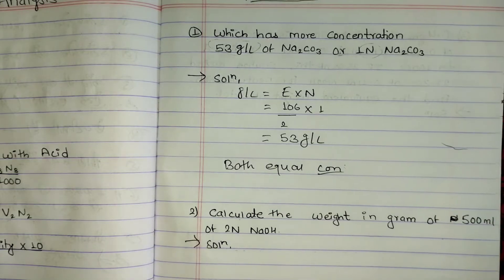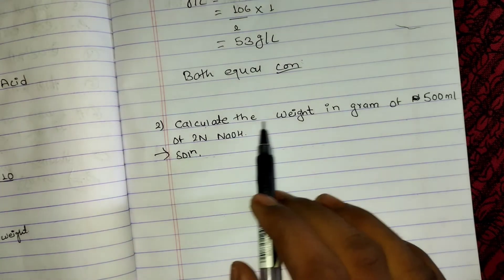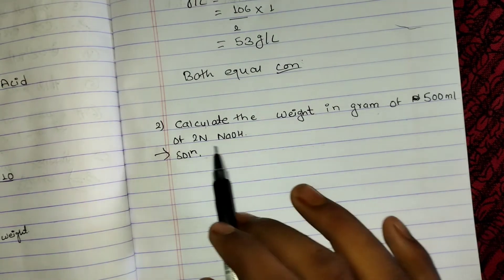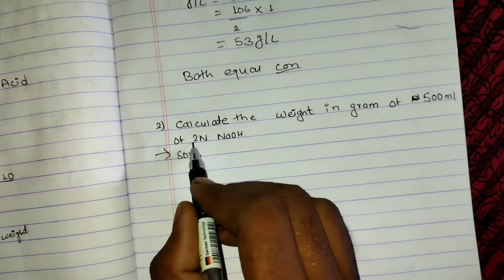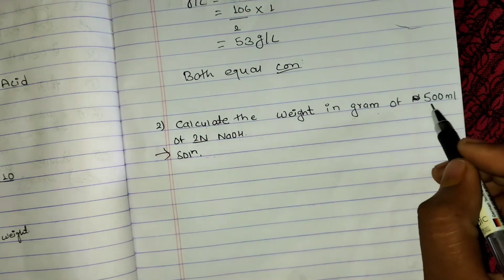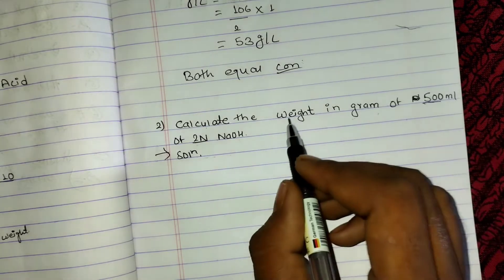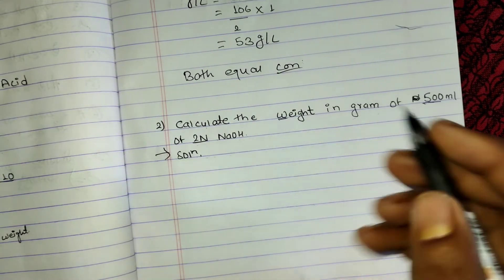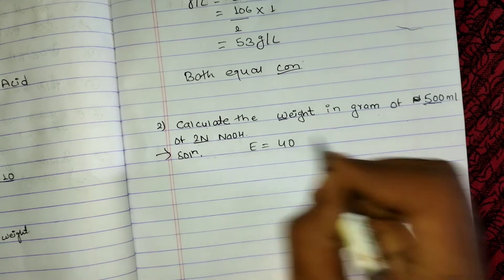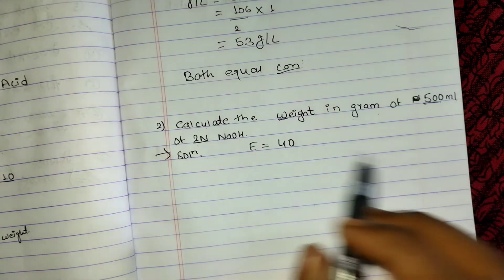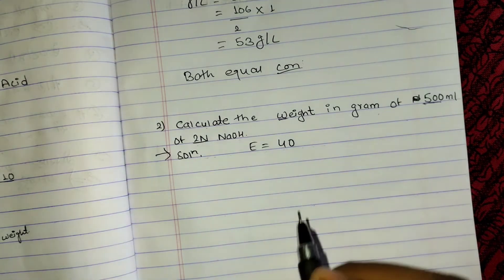Numerical 2: Calculate the weight in grams of 500 ml of 2N HNO₃. Given: normality = 2N, volume = 500 ml. The equivalent weight of HNO₃ is 63. Using the formula W = (V × E × N) / 1000.